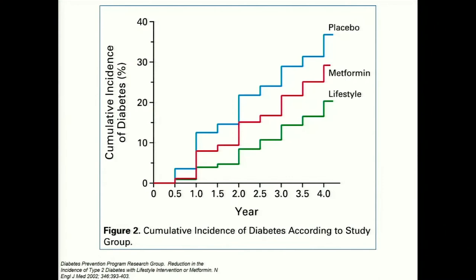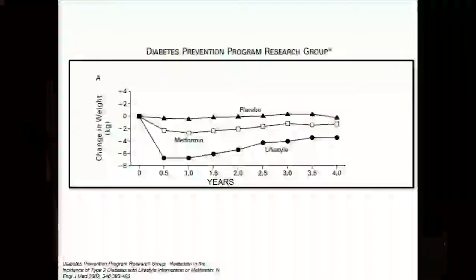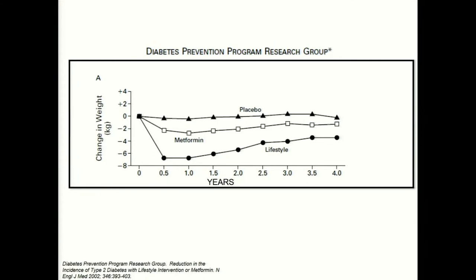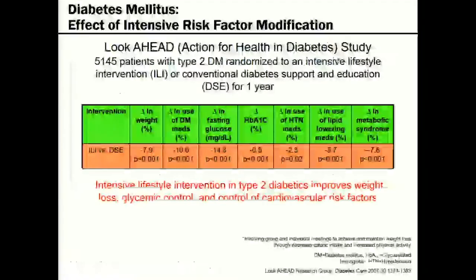For treatment of pre-diabetes, the data clearly shows lifestyle was better than metformin and placebo for decreasing incidence of diabetes later on. People in a structured lifestyle prevention program did much better — and we've developed a diabetes prevention program here at Loma Linda. In that same data, those in the structured lifestyle component lost significantly more weight than the other arms of the study, even years down the road.